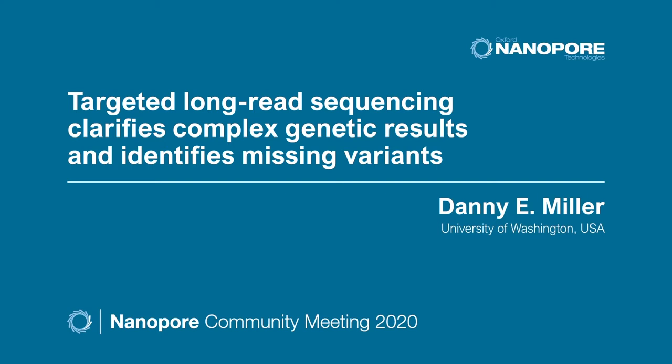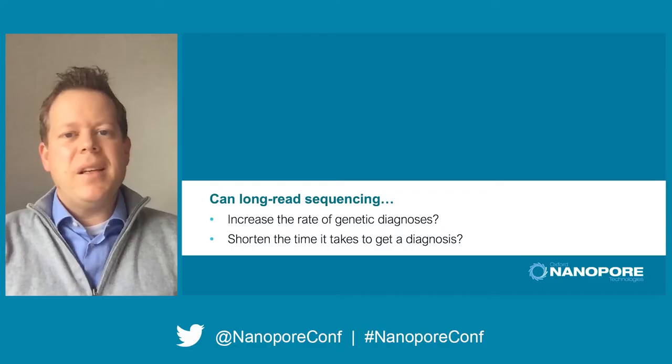Hi everybody, my name is Danny Miller and I'm a combined pediatrics and genetics resident at Seattle Children's Hospital and the University of Washington. I've been interested in long read sequencing for many years now and I'm very excited to tell you about how I've been using it recently to clarify complex structural variants and identify missing variants in patient samples. I'm excited about long read sequencing because I think it will both increase the rate of genetic diagnosis and also shorten the amount of time it takes to make a genetic diagnosis.